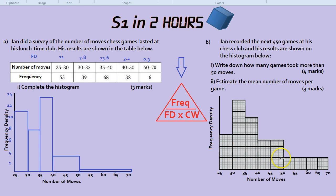The next type of question gives you the histogram, and you have to work out all sorts of things. So let's look at that. Jan recorded the next 450 games at his chess club, and the results are shown on the histogram below. Write down how many games took more than 50 moves. Well, we can see that the number of games that took more than 50 moves are represented by these blocks over here. Because here's the number of moves, and there's 50.